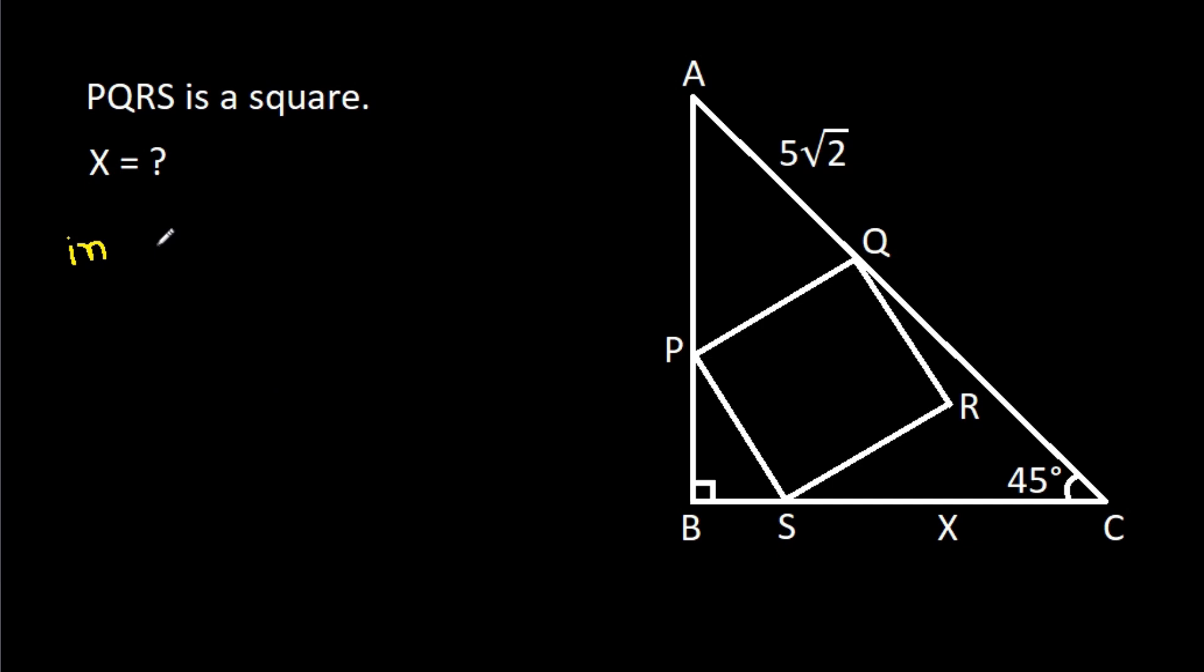In triangle ABC, this angle is 90 degrees, this angle is 45 degrees, so this angle will also be 45 degrees.